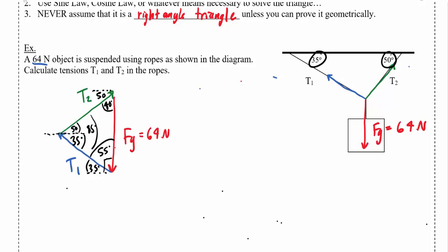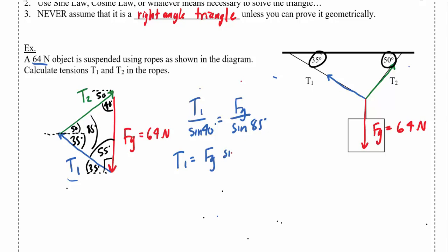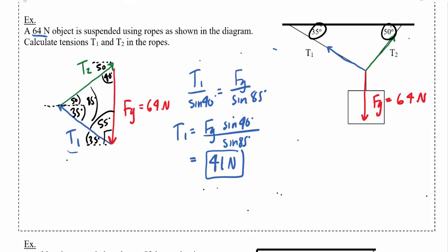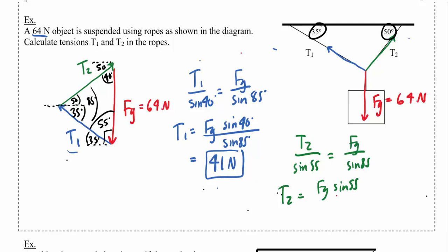Now we've got one side of our triangle and all the angles, so we can use sine law to find the other sides. T1 is opposite the 40 degree angle, so T1 over sine 40 equals Fg over sine 85. Solving: T1 equals Fg times sine 40 over sine 85, which works out to about 41 Newtons. Similarly T2 is opposite the 55 degree angle, so T2 over sine 55 equals Fg over sine 85, giving T2 equals Fg times sine 55 over sine 85, which works out to 53 Newtons.